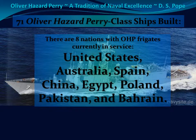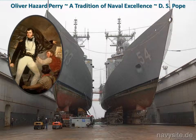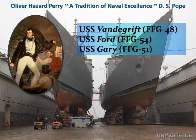There are eight nations with these frigates currently in service: the United States, Australia, Spain, China, Egypt, Poland, Pakistan, and Bahrain. All of the Oliver Hazard Perry frigates in the United States fleet are named after notable Navy heroes, following the pattern of the Oliver Hazard Perry. To demonstrate this, I can simply summarize the namesakes of the three ships I personally had the privilege of serving aboard during my Navy career.